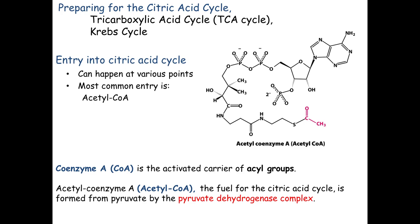To enter the cycle, I need to convert pyruvate into acetyl-CoA. What's shown here is a picture of acetyl-CoA — there's clearly more than three carbons there. Pyruvate is going to contribute two carbons to that big molecule. Everything drawn in black is the coenzyme A, the carrier or taxi that's going to carry my carbons around. Starting with pyruvate's three carbons, two of them, shown in pink, get attached to this carrier called CoA, or coenzyme A.